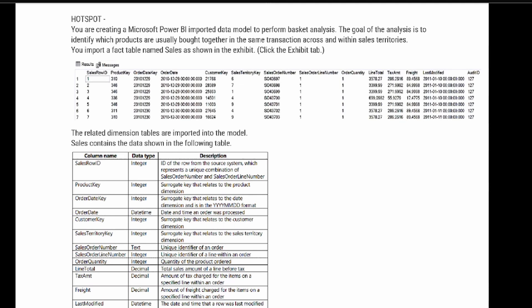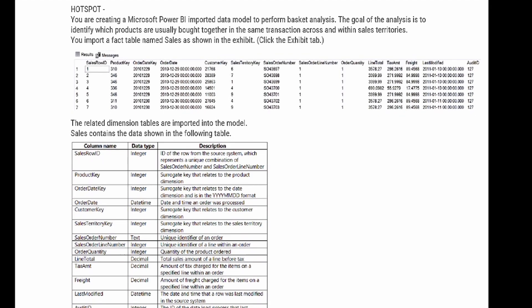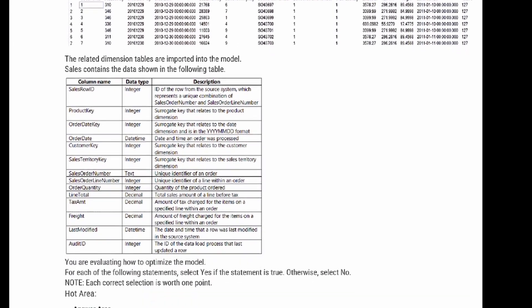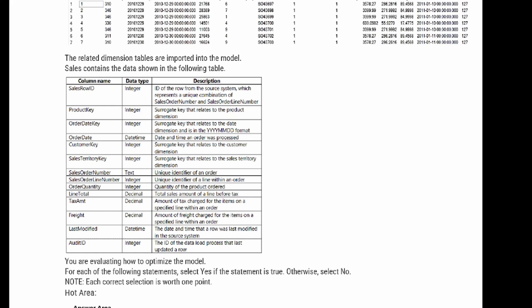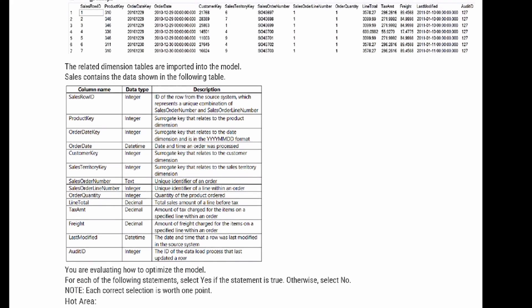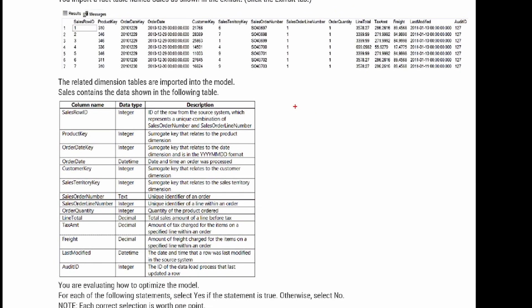The question says: you are creating a Power BI imported data model to perform basket analysis. The goal of the analysis is to identify which products are usually bought together in the same transaction across and within sales territories. You import a fact table named Sales, shown in the following exhibit. You can see several columns available: sales row ID, product key, order date key, order date, customer key, sales territory key, and so forth.